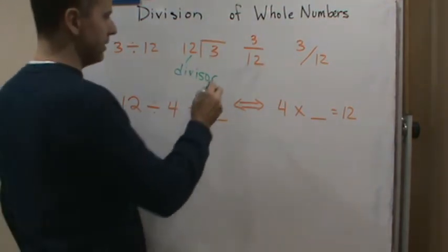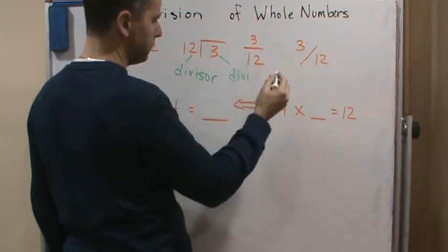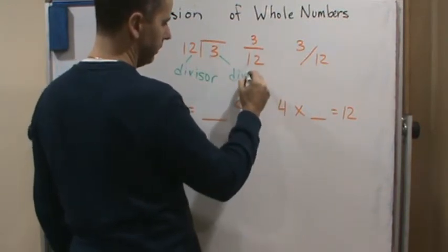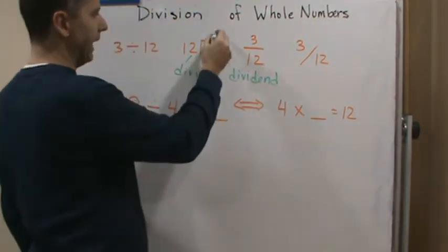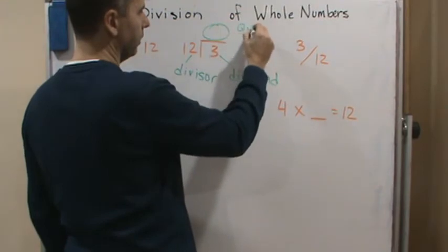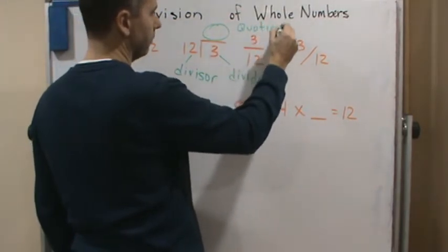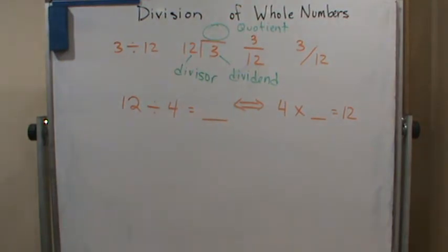This is called the dividend, that which is being divided, and then the answer that goes up here is called the quotient. Those are the three pieces of a division problem.